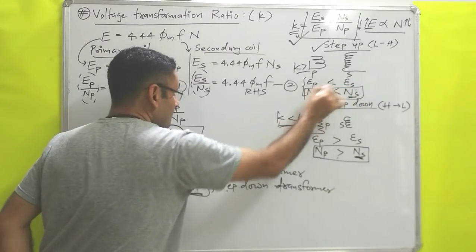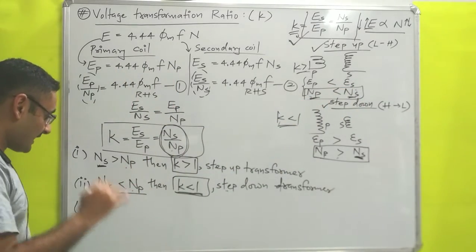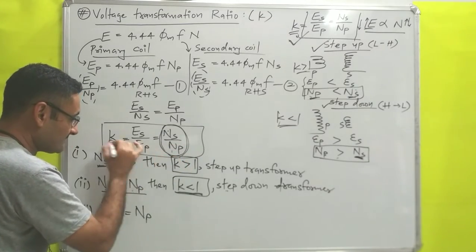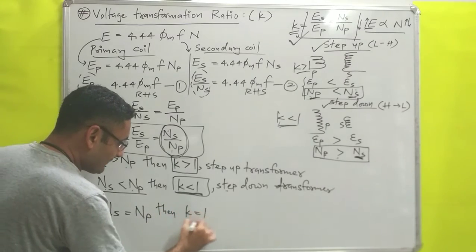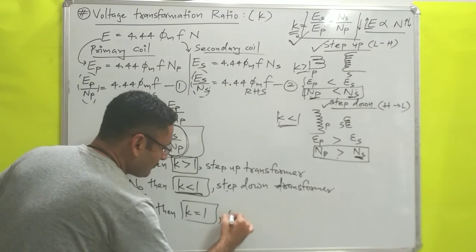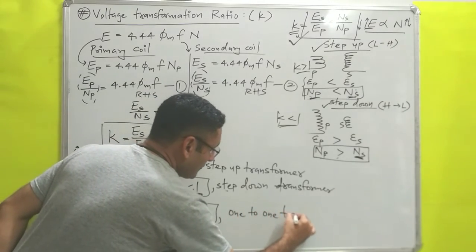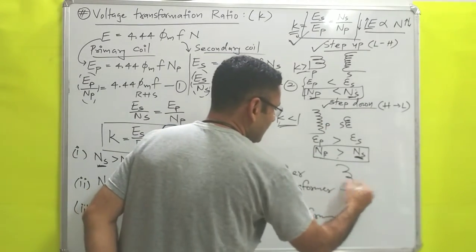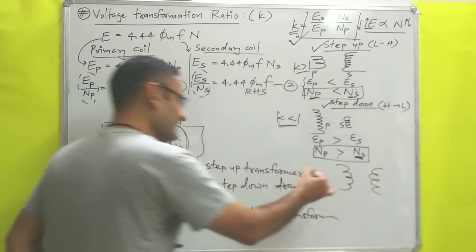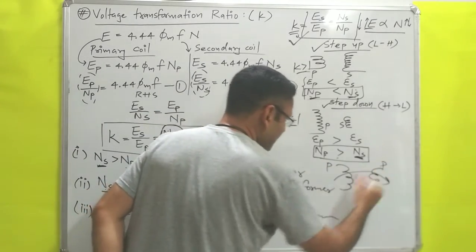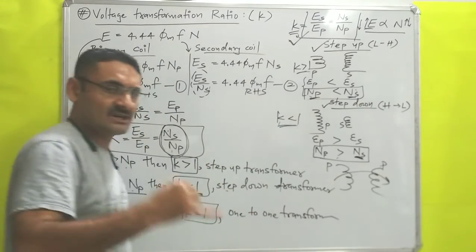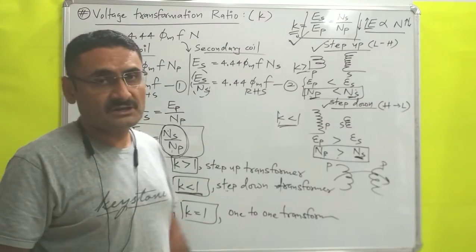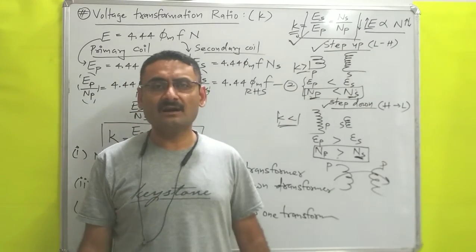Third and last case: if Ns equals Np, both values cancel out and K equals one. K equal to one corresponds to a one-to-one transformer, where the number of turns in the primary and secondary coils are the same. Mutual induction still takes place and power is transmitted, but voltage and current do not change. This is all about the voltage transformation ratio. Read hard, work hard — thank you very much.